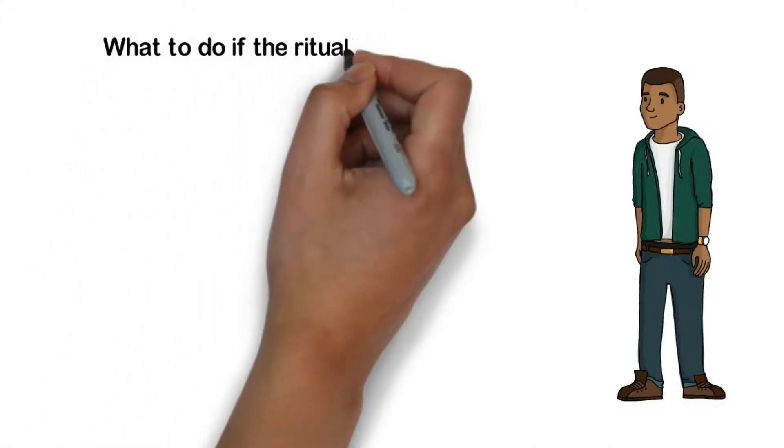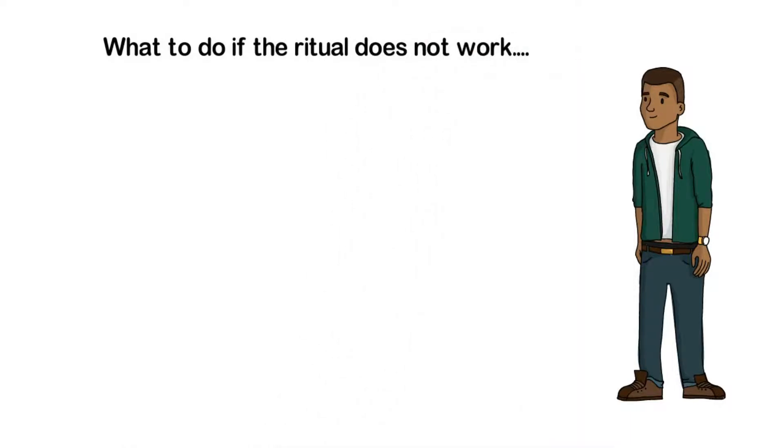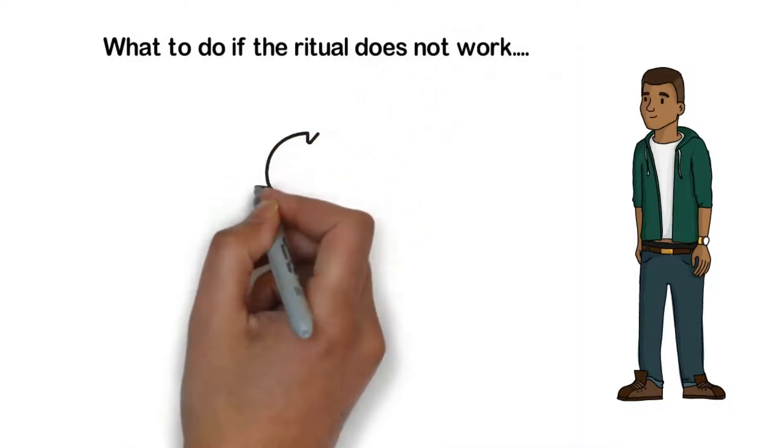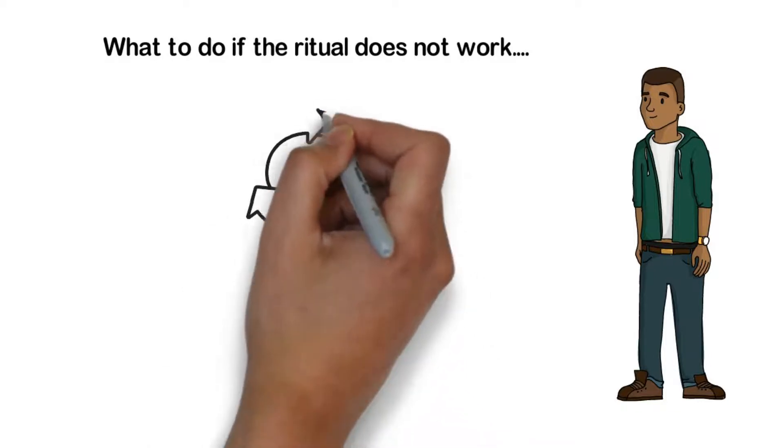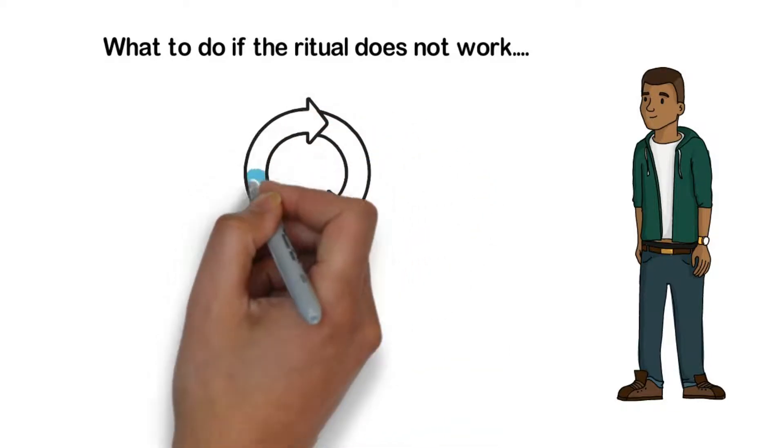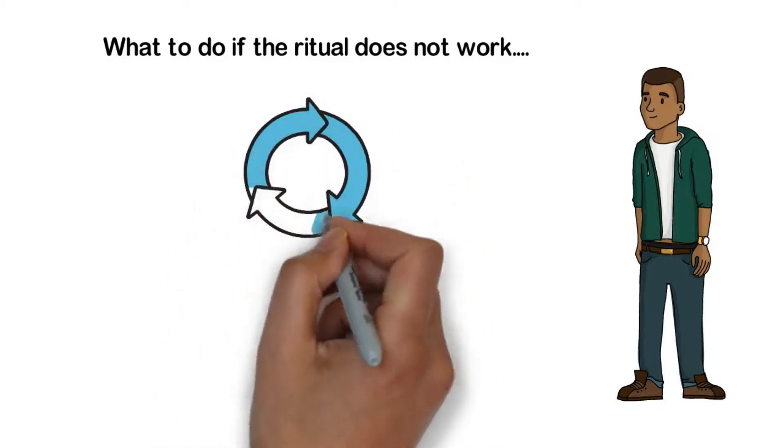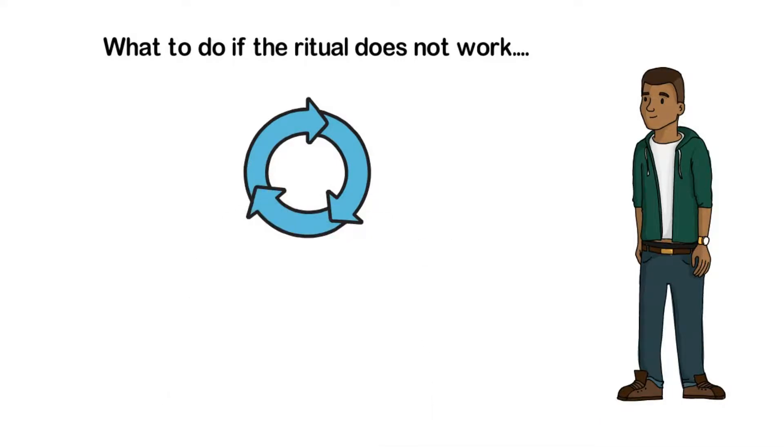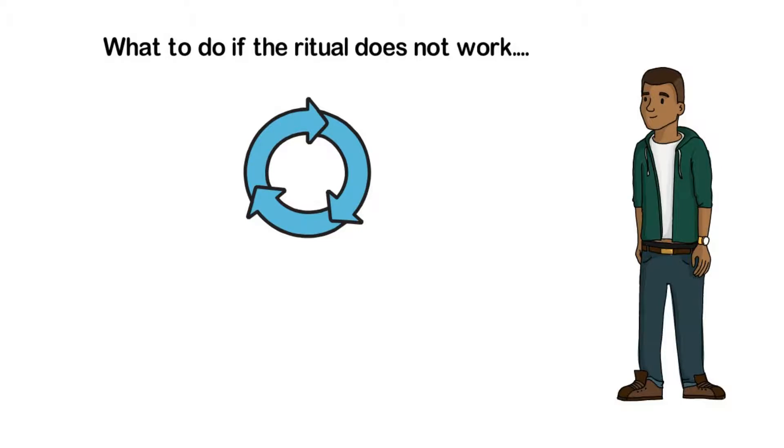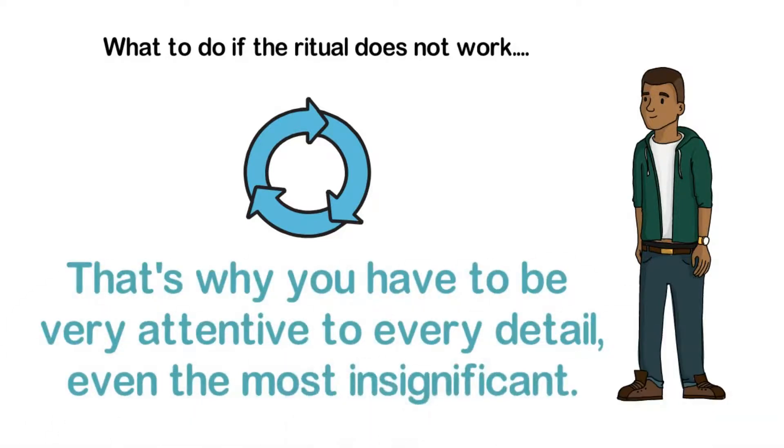What to do if the ritual does not work? If you do not see any changes in your life, you can repeat this ritual by following all the instructions. The ticket may have been touched by your children or spouse. Choosing a candle that is not green is also one of the reasons why your dream has not been realized. You have to be very attentive to every detail, even the most insignificant.